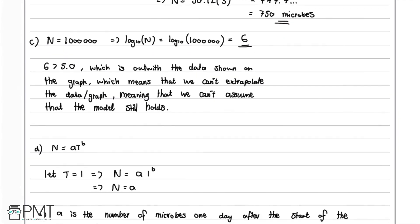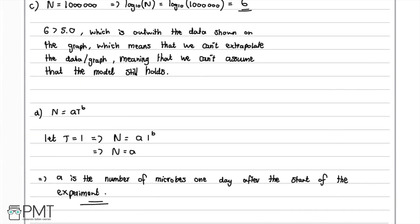Part c was worth two marks. The first mark was for starting with n equals 1 million and establishing that log₁₀(n) equals 6. The second mark was for the reasoning — explaining that we can't extrapolate the graph and therefore can't assume the model still holds. Finally, part d had one mark, awarded for stating that a is the number of microbes one day after the start of the experiment.